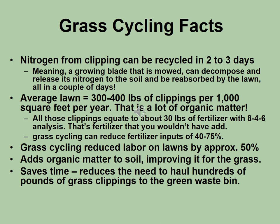Lawns are very high maintenance and resource consumptive. Those blades of grass you cut decompose really fast — two to three days a clipping will decompose, release nitrogen to the soil, and be reabsorbed by the lawn. So to remove clippings means quickly those blades will need more nitrogen and can starve if you don't keep adding fertilizer. Average lawns create about 300 to 400 pounds of clippings per thousand square feet per year — that's a lot of organic matter being removed from soil. All those clippings equate to about 30 pounds of fertilizer, so it's better to leave them there. Grass cycling also reduces labor for lawn care and can save lots of time hauling clippings to green waste and then buying fertilizer and hauling it back.